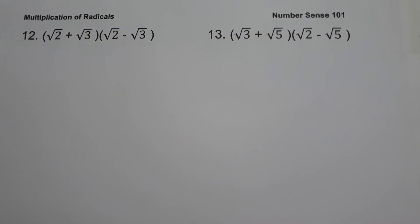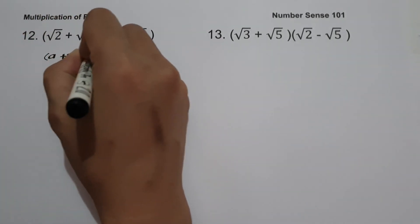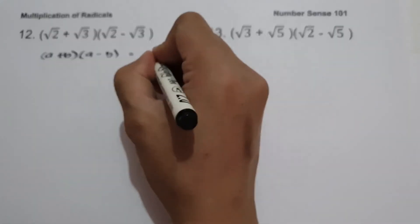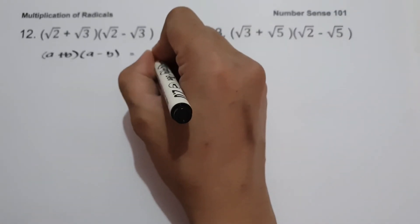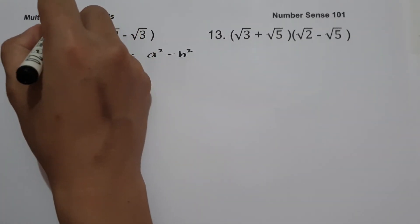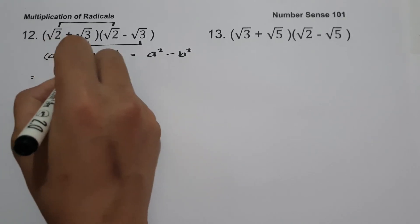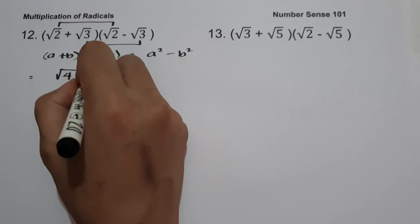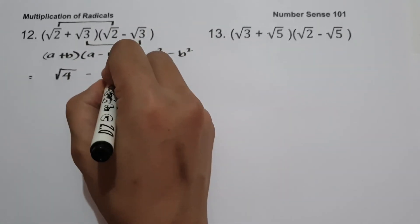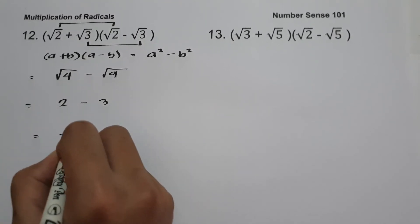On example number twelve we have the quantity square root of 2 plus square root of 3 times the quantity square root of 2 minus square root of 3. This is a product of sum and difference in the form (A plus B)(A minus B) equals A squared minus B squared. So: square root of 2 times square root of 2 is 4, minus square root of 3 times square root of 3 which is 9. Square root of 4 is 2, square root of 9 is 3, and 2 minus 3 equals negative 1.